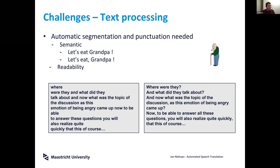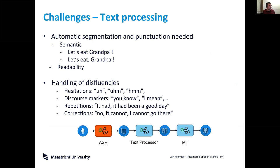Here you see on the left and right the same text: the right version has correct segmentation and punctuation, while the left one is segmented randomly. It is a lot harder to get the meaning on the left side than on the right. In addition, we don't speak fluently — we have disfluencies, we say 'um' and 'uh.'